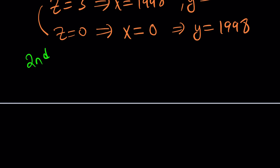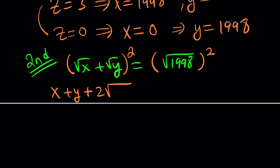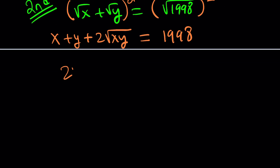For the second method, we're just going to take the original problem and square both sides. When we do, we get x plus y plus 2 times the square root of xy equals 1998. Let's isolate the radical term and write it like that.